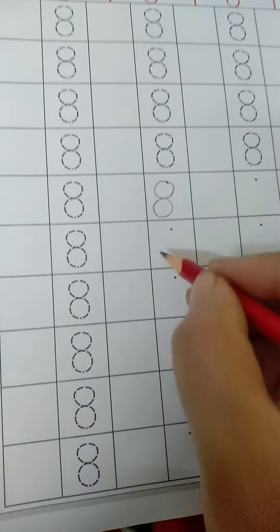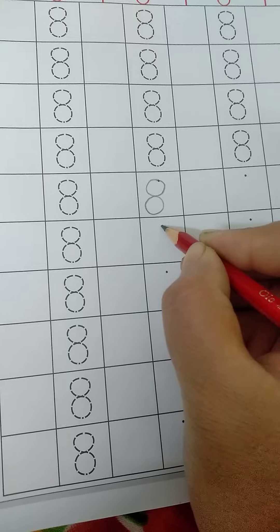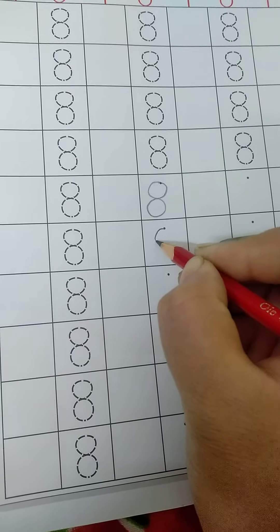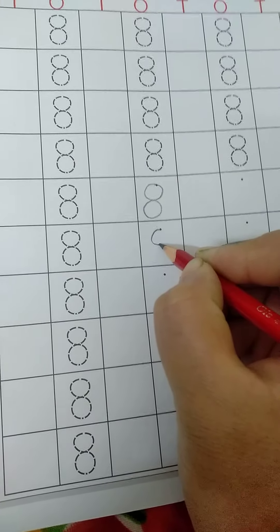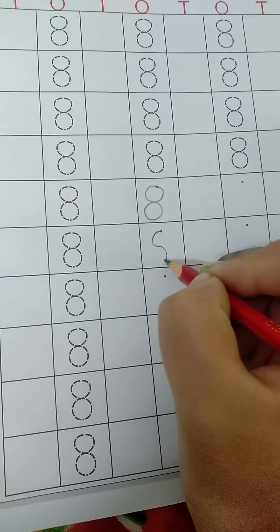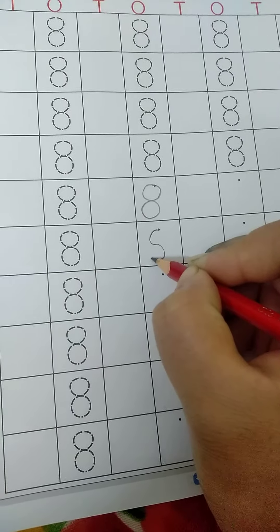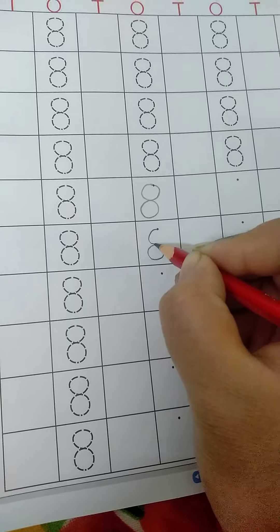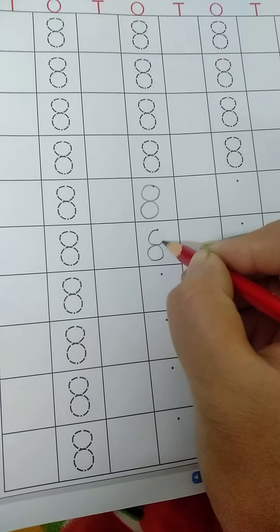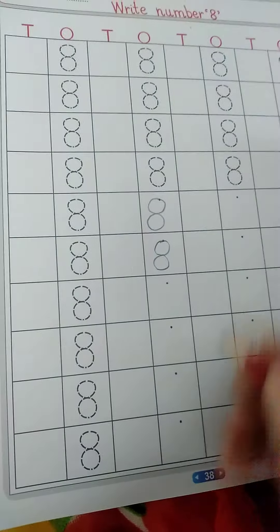Right curve up. To make 8. Right curve down, left curve down, right curve down, left curve up, right curve up. Make 8.